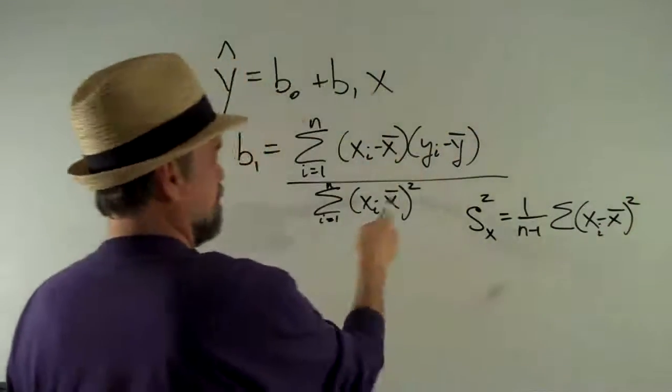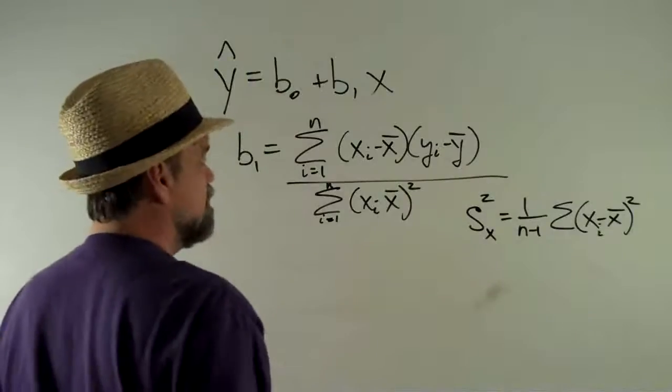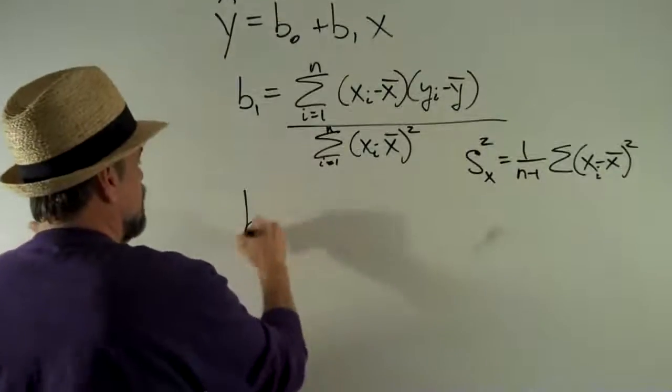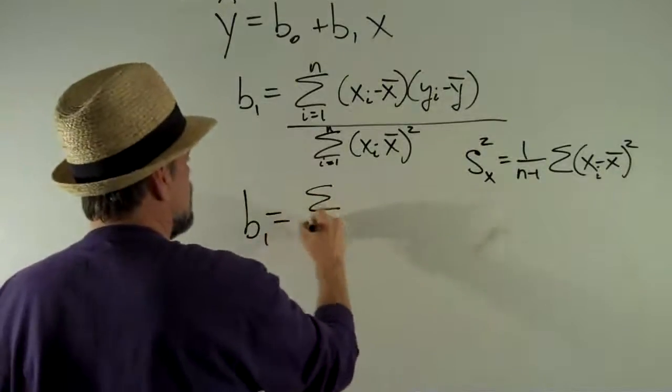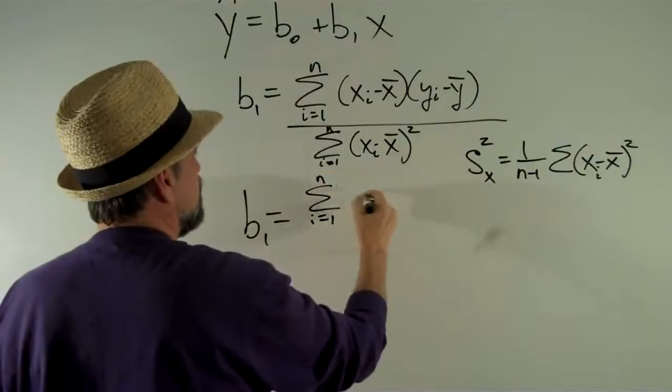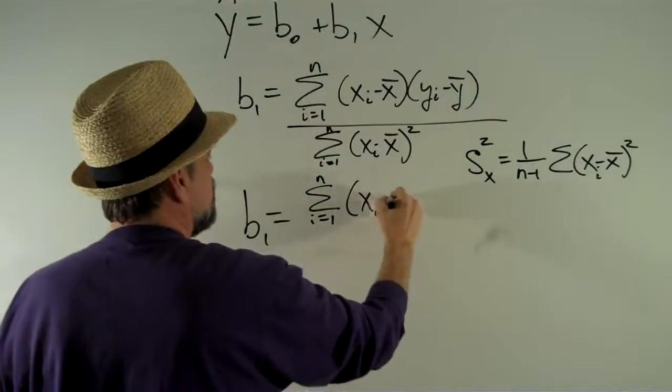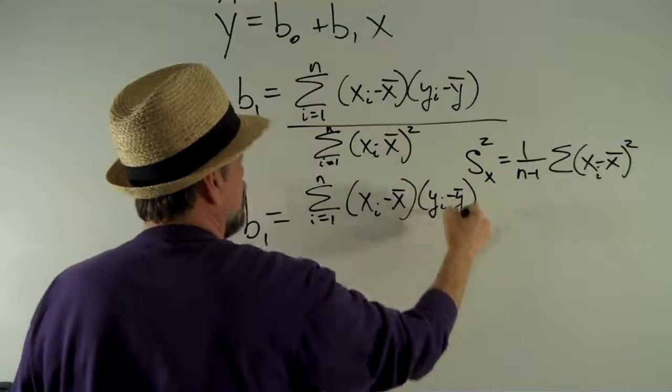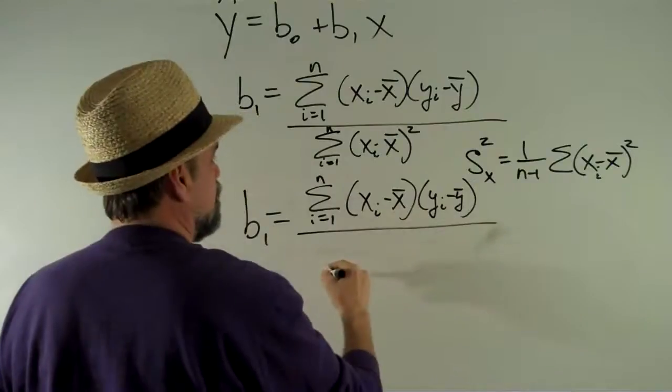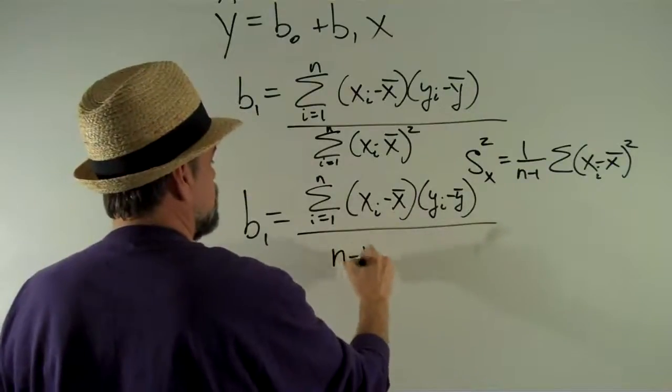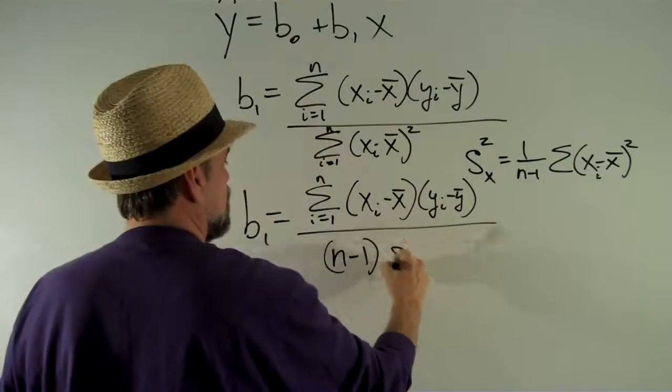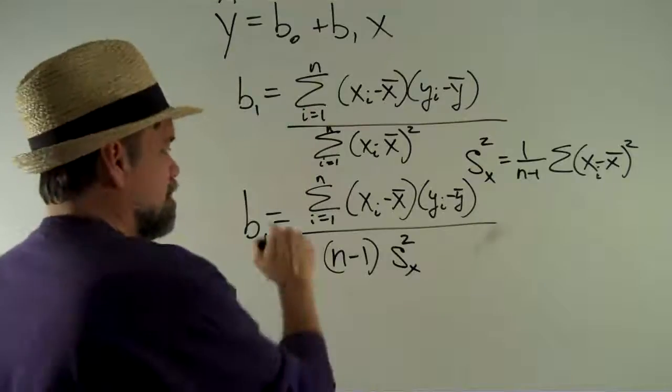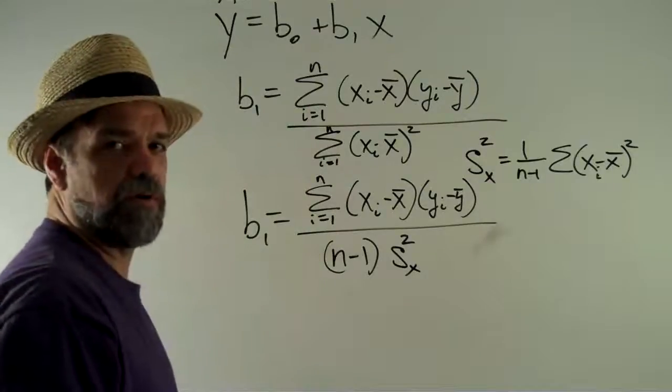You'll notice that looks a little bit like our denominator. Another way of describing the denominator would be that b-one is the sum as i goes from one to n of xi minus x-bar times yi minus y-bar over n minus 1 times the variance of x. As a matter of fact, let's define it like that for a little while.